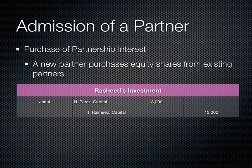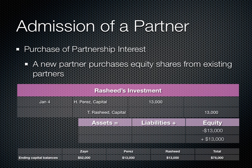In this first scenario, Rashid enters the partnership by purchasing half of Perez's shares. In this case, we debit Perez's investment by $13,000 and credit Rashid's investment by the same amount. On the statement of partners' equity, Rashid is added with a capital balance equal to Perez's.